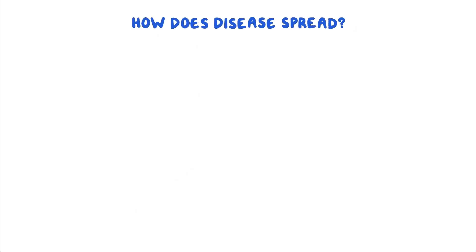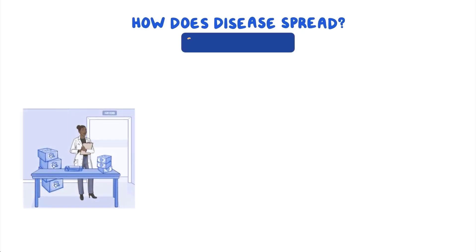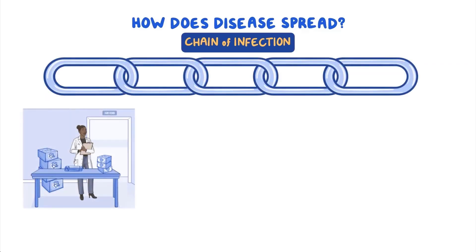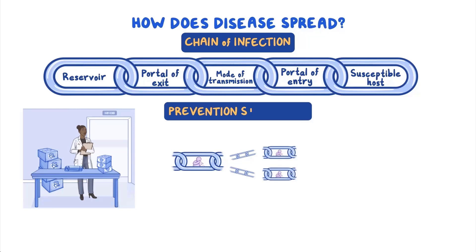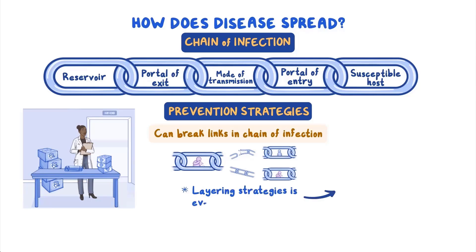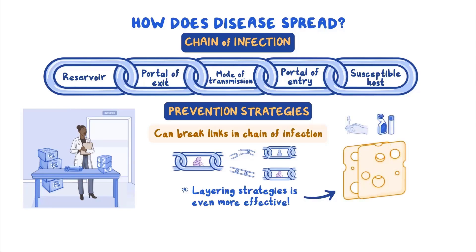As a quick recap, we can answer the question 'how does disease spread?' by illustrating or creating a model of the infectious agent's chain of infection. It starts with an infectious agent at its source or reservoir. The agent then leaves through a portal of exit and spreads either through direct or indirect mode of transmission. Finally, the agent can use a portal of entry to enter a susceptible host. Contagious diseases spread easily from person to person because one person with the disease could potentially transmit to more than one susceptible host. Prevention strategies can break links in the chain of infection, but no strategy is perfect. Layering strategies is even more effective in stopping the spread of disease.